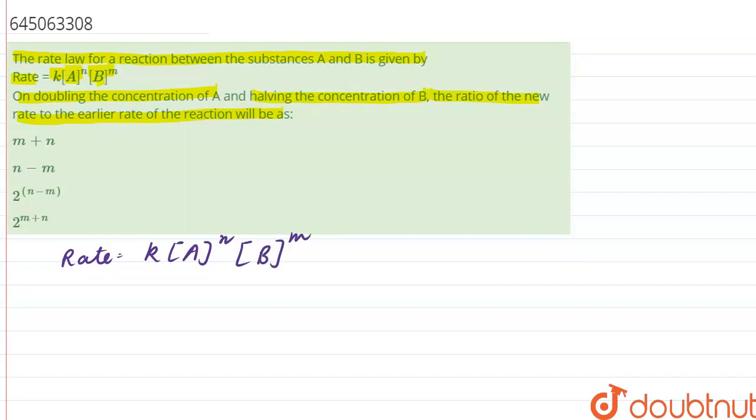We have been given that the concentration of A is doubled. This is the new rate. So if we start writing the new rate, let this be R2.